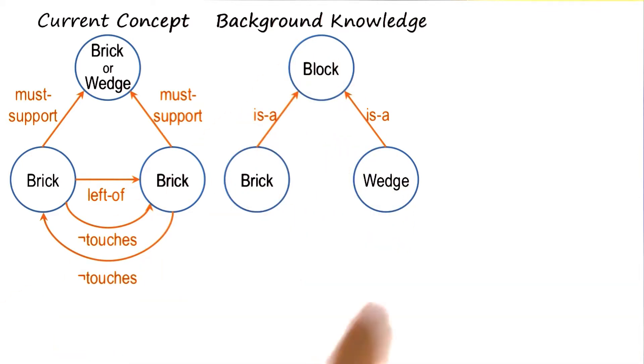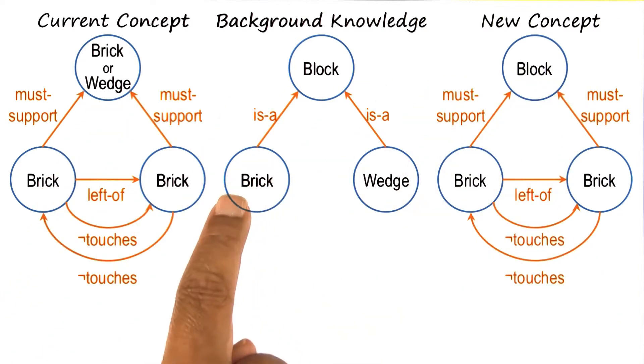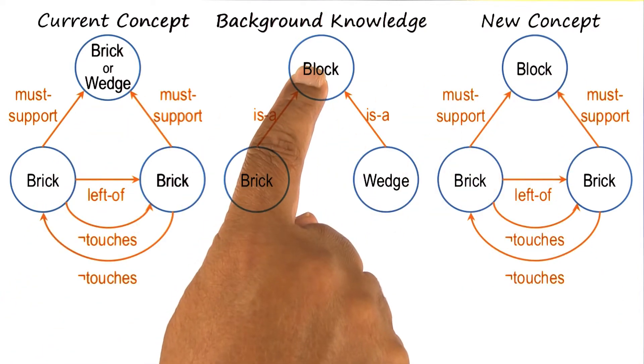In that case, the AI programmer uses background knowledge to further revise its current concept definition and replaces brick or wedge by a block, because both bricks and wedges are examples of blocks.